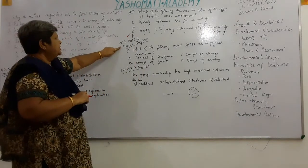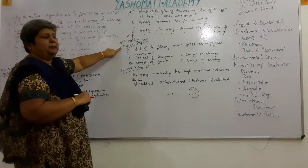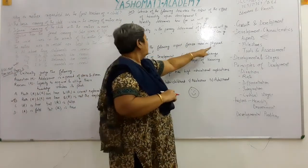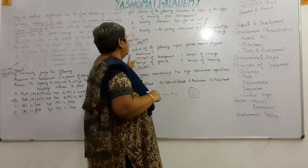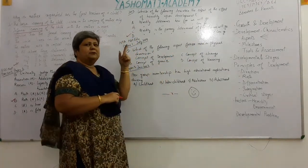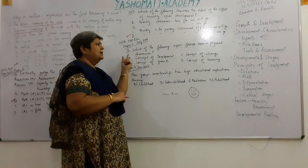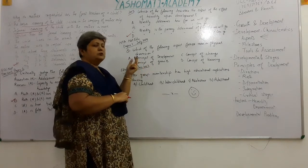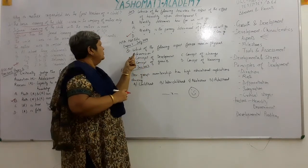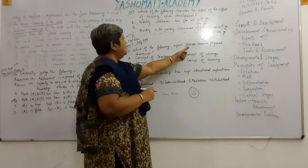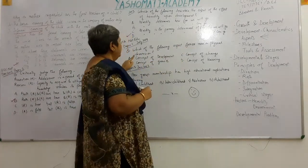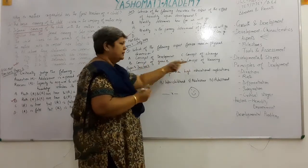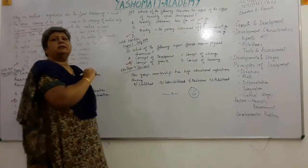Next question from Paper 2, 2018: Which of the following aspects focuses more on physical dimension? Options: concept of development, concept of change, concept of growth, concept of learning. Growth was taught as physical; development is psychological, emotional, and social — internal development. So the correct option is C — concept of growth.